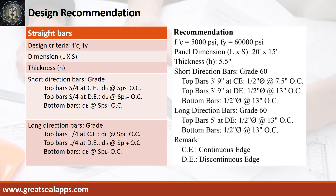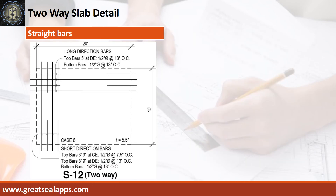Design recommendation: FC prime equals 5,000 PSI, FY equals 60,000 PSI, panel dimension is 20 feet by 15 feet, thickness is 5.5 inches. Short direction bars of grade 60: top bars at continuous edge use half-inch diameter bar at 7.5 inches on center; bottom bars use half-inch diameter bar at 13 inches on center. Thank you for watching. If you learned something from this video, please like, share, and subscribe to this channel.